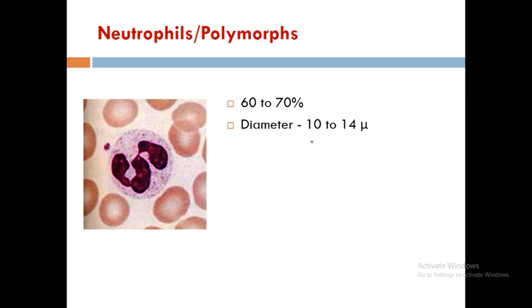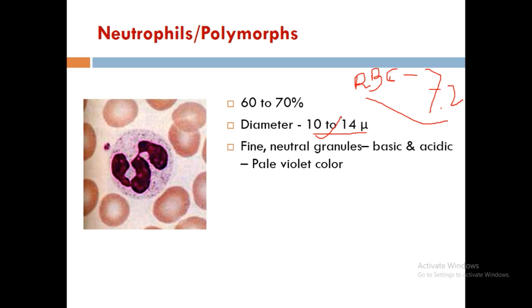The diameter of neutrophils is 10 to 14 microns, compared to the diameter of RBCs which is around 7.2 microns. Neutrophils have fine neutral granules which are either basic and acidic, giving a pale violet color, and a multi-lobed nucleus — that is why they are known as polymorphs.